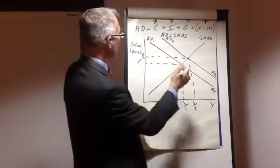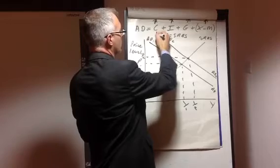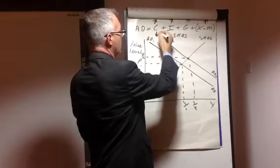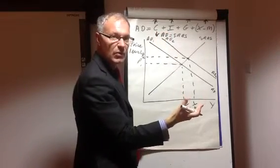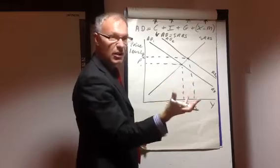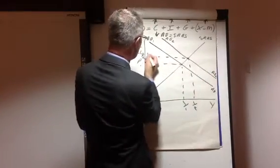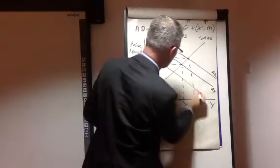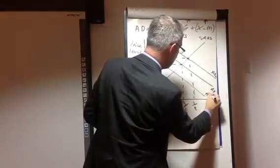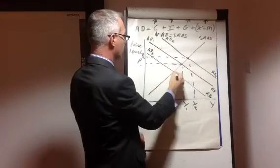Again, if there's a reduction in consumption, say, because of higher interest rates, or higher income taxes, or other things being equal, aggregate demand would shift to the left, to AD3, shift to the left.